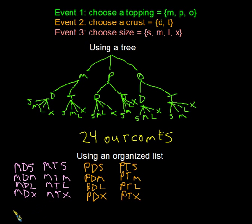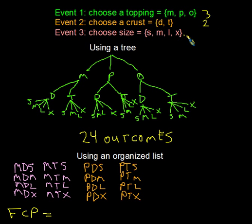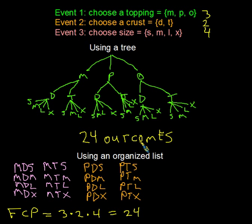Let's use the Fundamental Counting Principle. How many outcomes for event one? Three. Event two? Two. Event three? Four possible outcomes. The Fundamental Counting Principle says to multiply the number of outcomes for the entire sequence of events to get the total — that's 24, the same number we counted with the tree and the organized list.